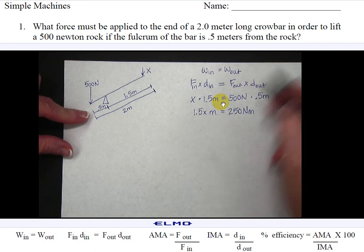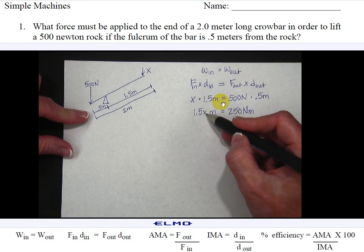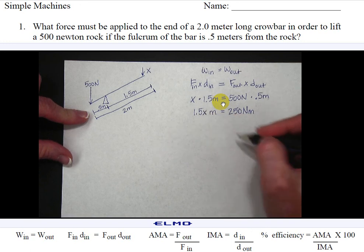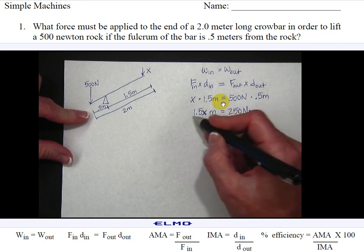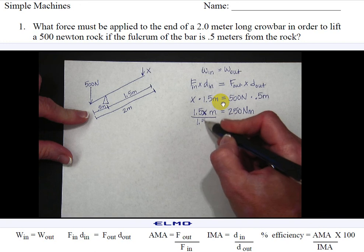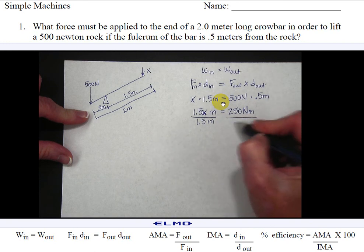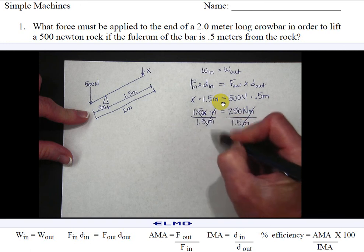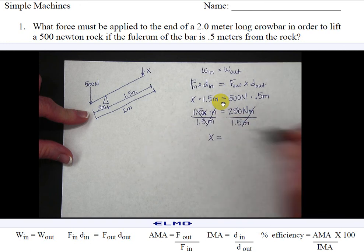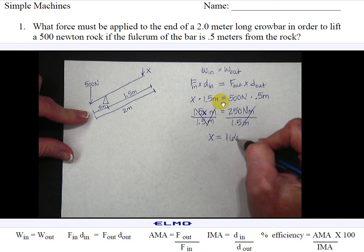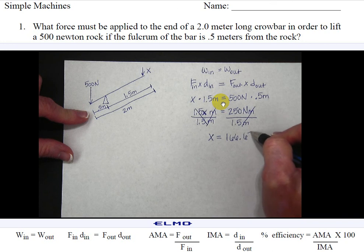Now in order to figure out my input force, which is x, I need to divide by 1.5 meters. So x which represents my input force equals 166.67 newtons.